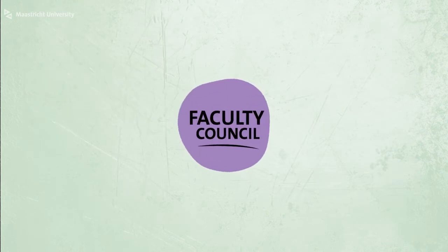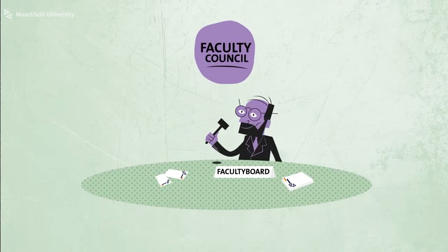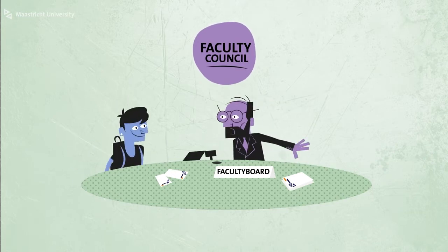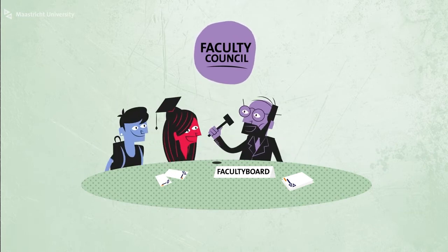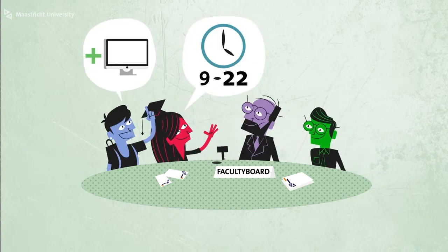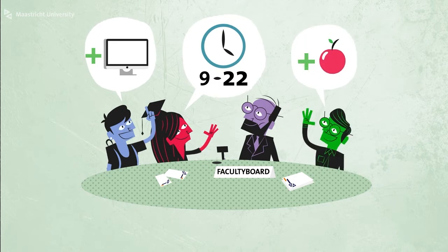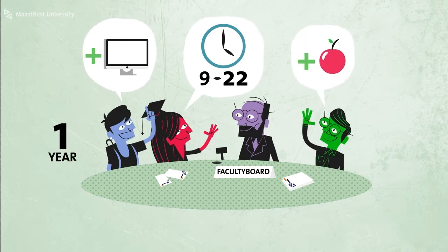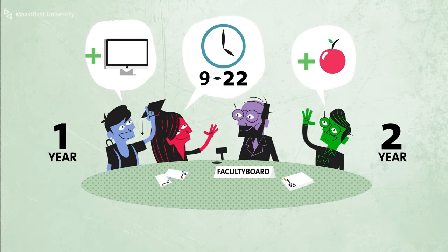Each faculty has its own Faculty Council. These Faculty Councils also include students, academic staff and support staff. They discuss issues that are important for the faculty. Here as well, students are elected for one year, staff for two years.